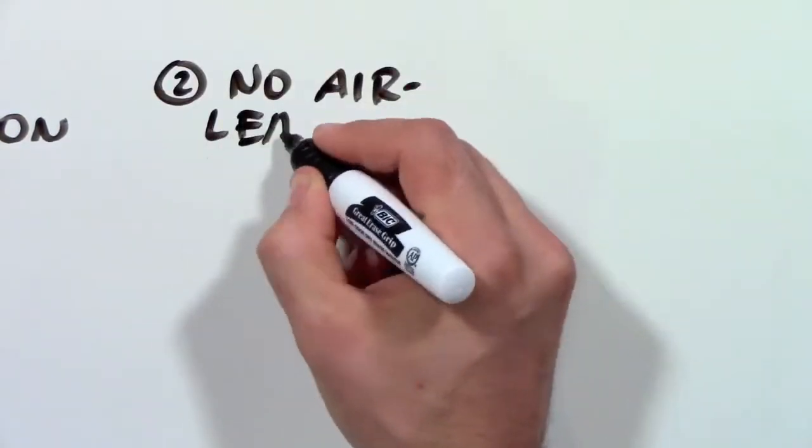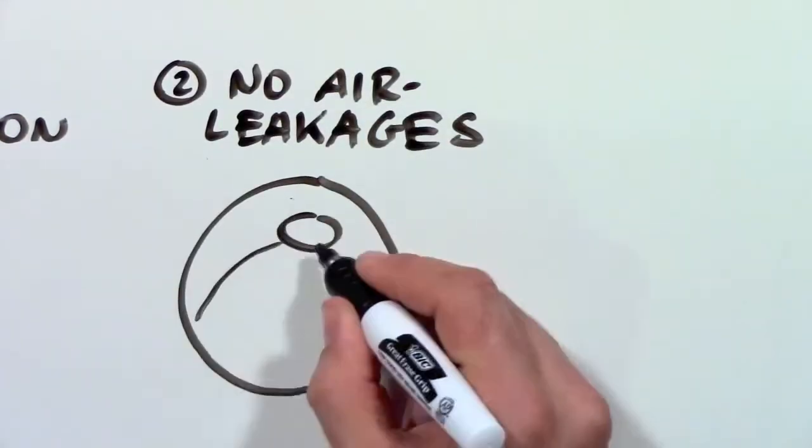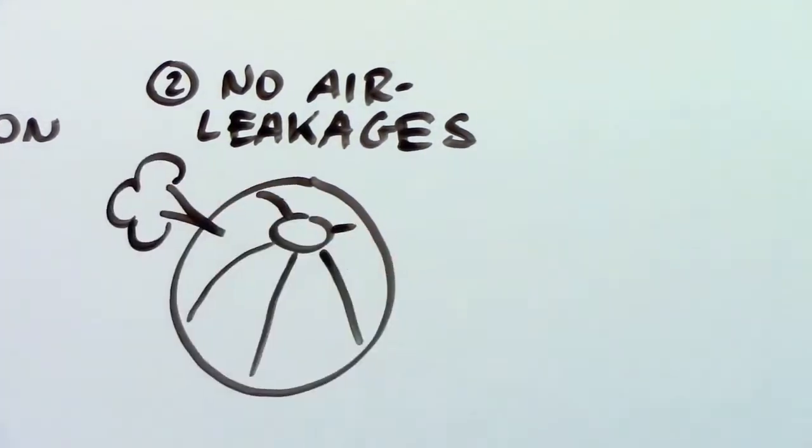2. No air leakages. There should be no holes, small or large, to let hot air out of the house.